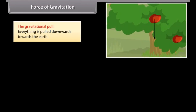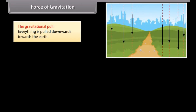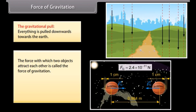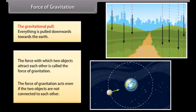Force of gravitation. Everything is pulled downwards towards the earth. The force with which two objects attract each other is called force of gravitation. The force of gravitation acts even if the two objects are not connected to each other.